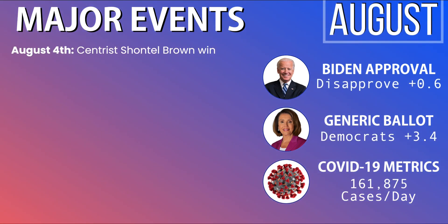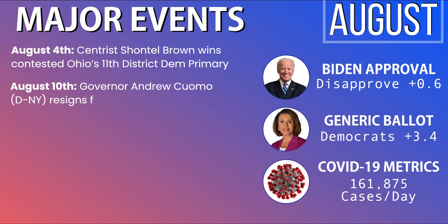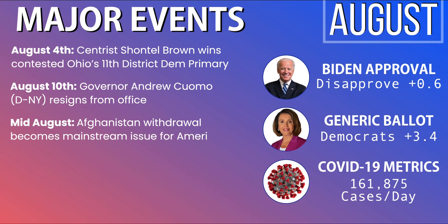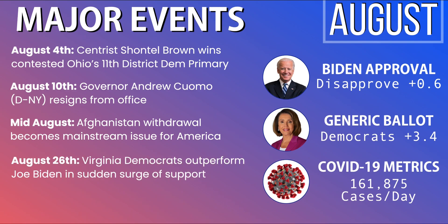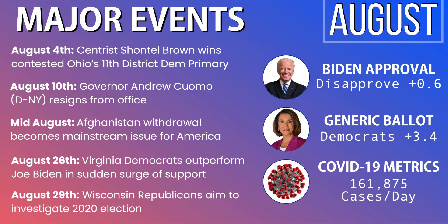In the month of August, on August 4th, centrist Shontel Brown won the contested Ohio 11th District Democratic primary against Nina Turner, going on to win the general election in November. On August 10th, Governor Andrew Cuomo of New York resigned from office amidst a number of allegations. In the middle of August, Afghanistan's withdrawal became a mainstream issue and proved detrimental to Joe Biden and his administration. On August 26th, Virginia Democrats outperformed Joe Biden in new polls despite his falling approval. On August 29th, Wisconsin Republicans aimed to investigate the already-certified 2020 election. Biden's approval dips into the negative for the first time at disapprove plus 0.6%, Democrats lead the generic ballot by just 3.4%, and COVID cases double to 162,000 per day.